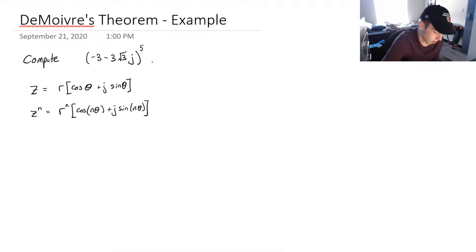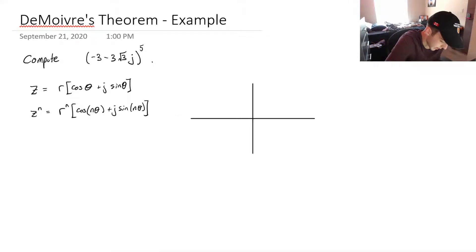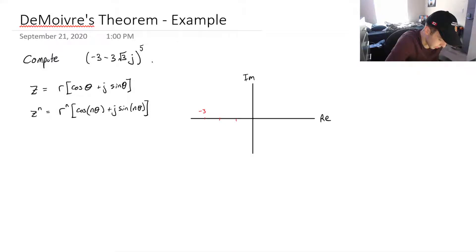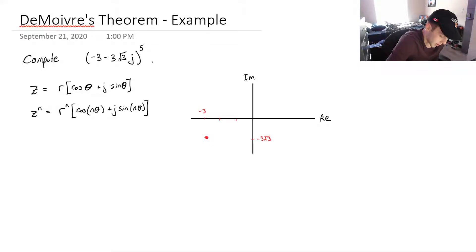Let's first draw that complex number on an Argand diagram. This is the imaginary axis, this is the real axis. We go minus 3 in the real direction, and then on the imaginary axis we go minus 3 root 3. So the complex number is approximately there, and we draw it as a vector coming from the origin — this right here is z, and this is what we want to raise to the exponent of 5.